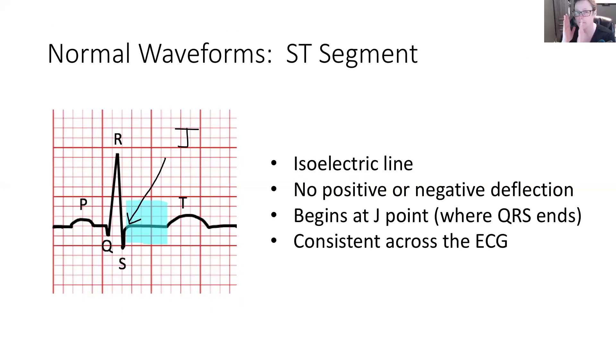The ST segment is a place of flat, isoelectric, no net movement in the heart for electricity. It is between the QRS complex, so as soon as it comes back to isoelectric line, and it goes until the repolarization phase, the resting phase of the ventricles, where that T wave leaves. We don't measure its duration. We look at its amplitude, and we should find that that is a flat line, and it is the same as the isoelectric line pre-complex.